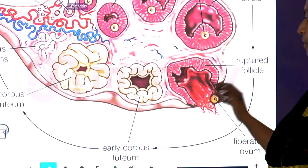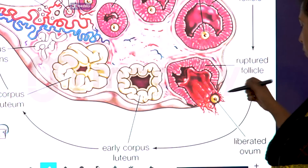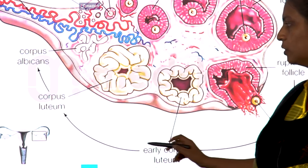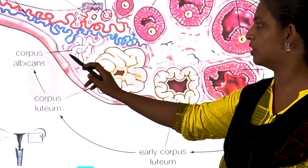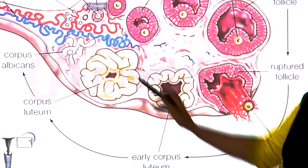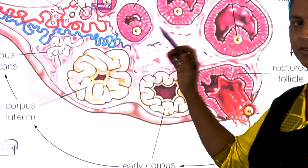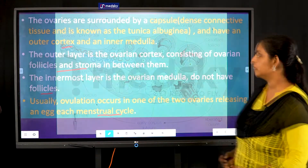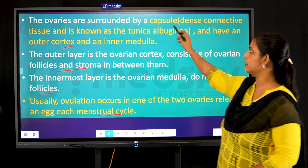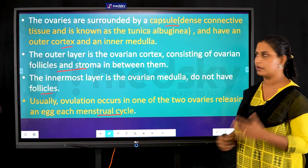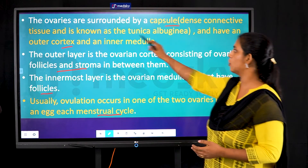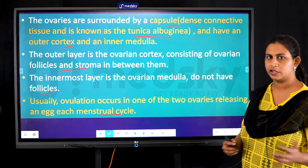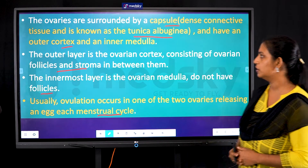The Graafian follicle reaches a stage where it ruptures, liberating the ovum. After rupture, an early corpus luteum forms, which later becomes the corpus albicans. If fertilization or pregnancy has occurred, this corpus luteum will be maintained. Structurally, the ovaries are surrounded by a capsule called the tunica albuginea.